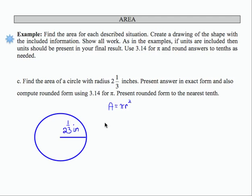So let's input the information that we can, which is the pi and then the radius is 2 and 1/3. And I'm going to square that.